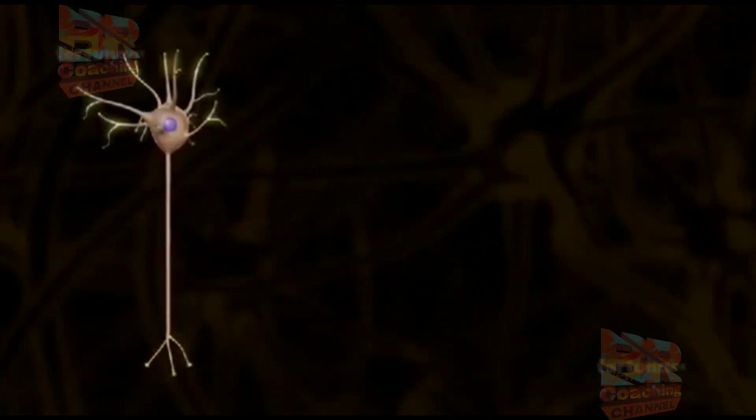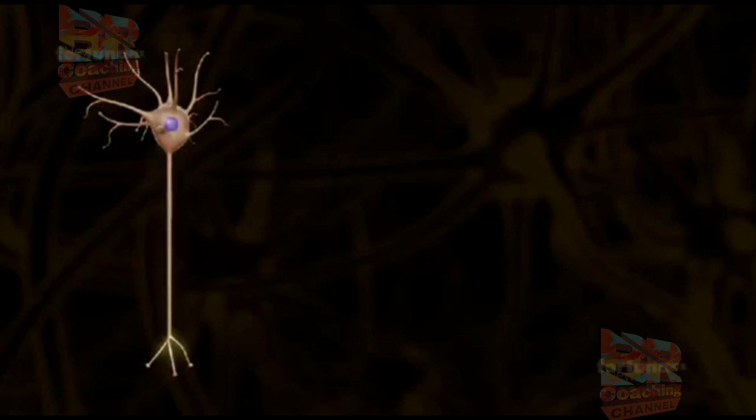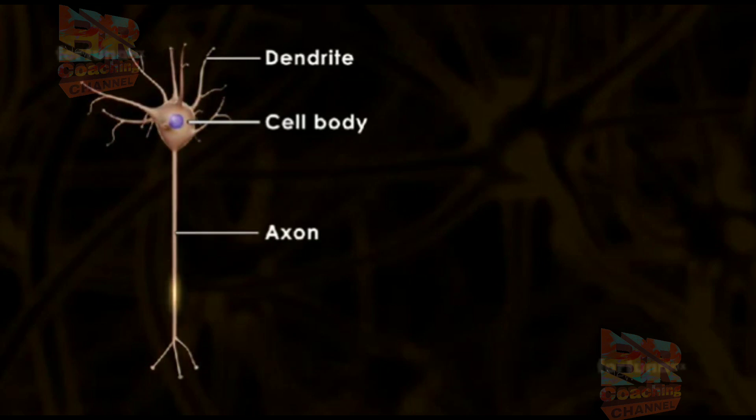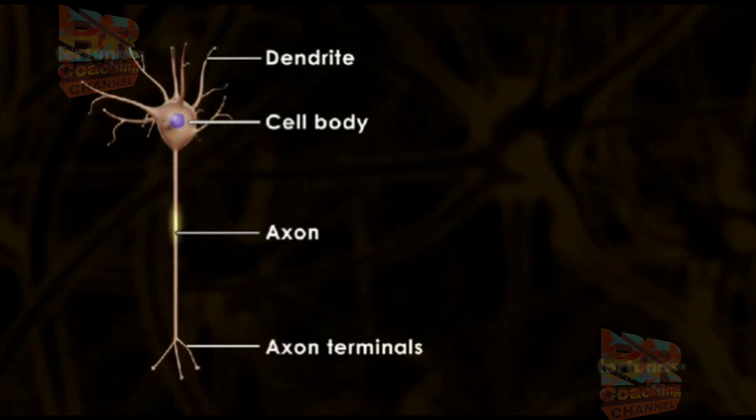Typically there are four parts in a neuron: the cell body, the dendrites, an axon, and the axon terminals.